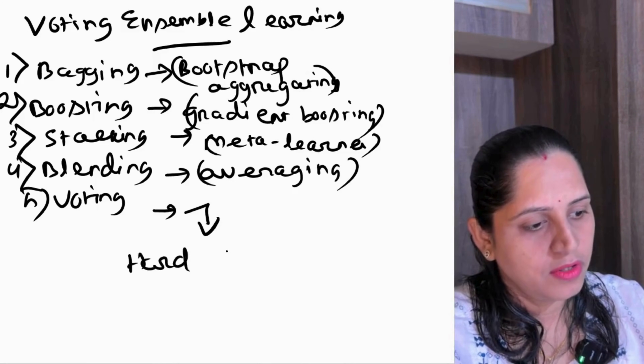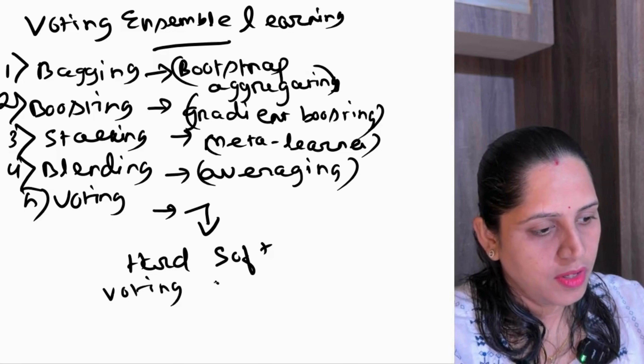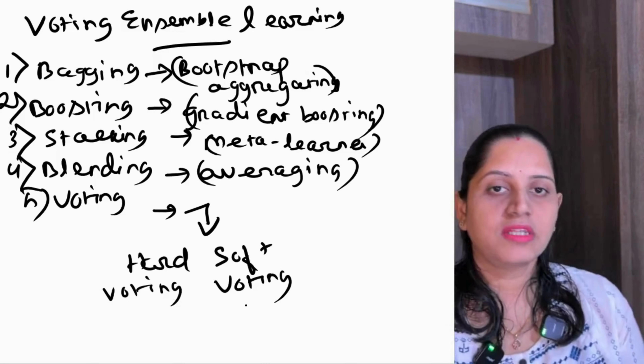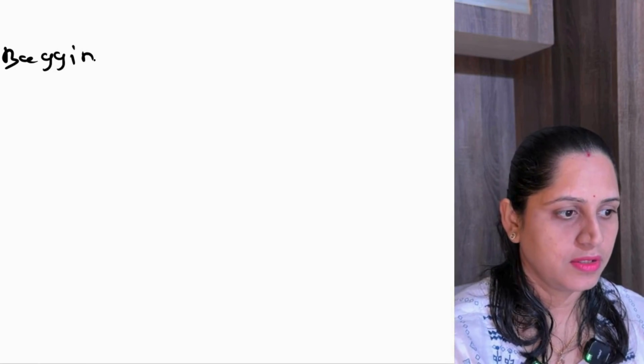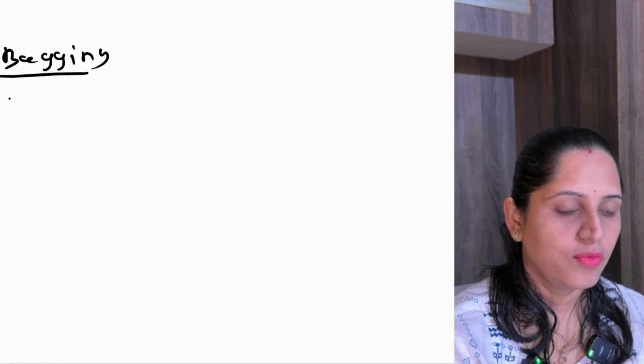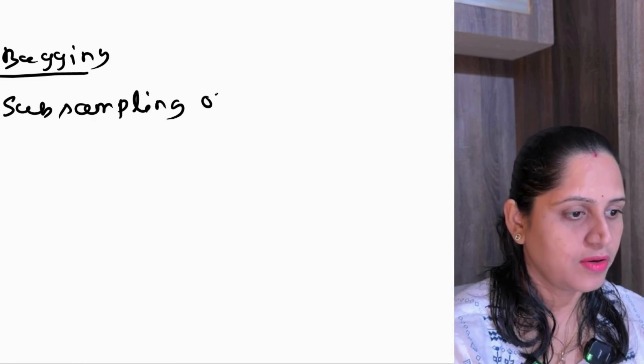In voting we have two things to understand: hard voting and soft voting. Before moving ahead, let's also refresh what bagging is. In bagging we are getting sub-sampling of our data.